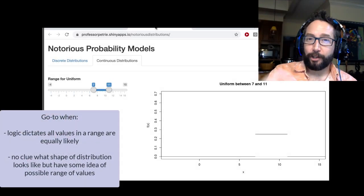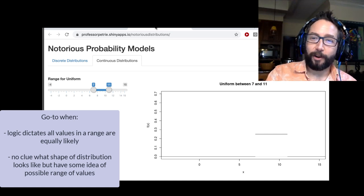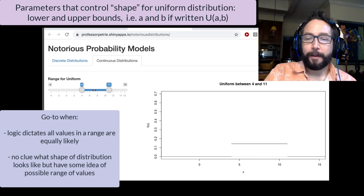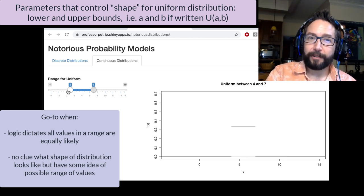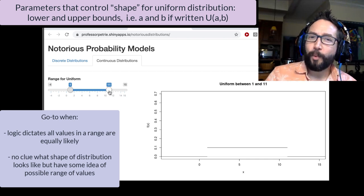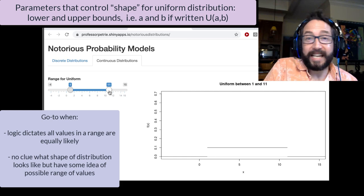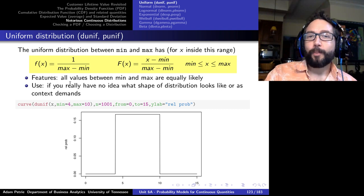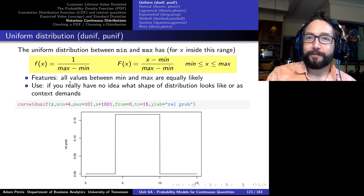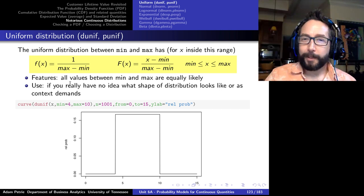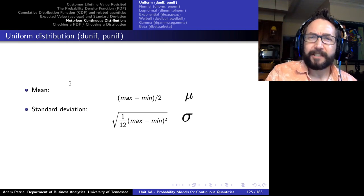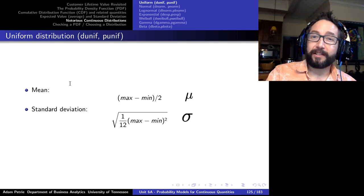On the Shiny app, the two parameters we can tweak are the lower and upper bounds. Any value inside that range is equally likely — a flat PDF between the lower and upper values and zeros throughout the rest. Not one we typically use in business analytics unless we have no information about the process. Formulas exist for the expected value — just max minus min over two — and for the standard deviation. It's the first and simplest distribution in the continuous notorious zoo.